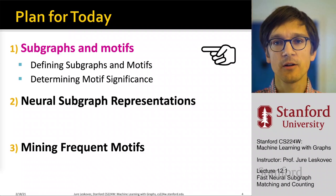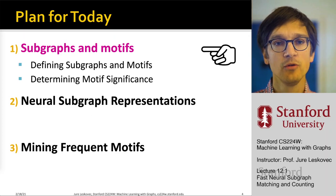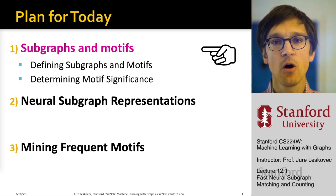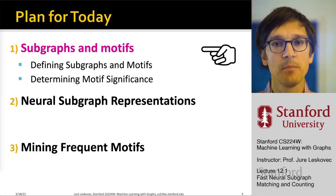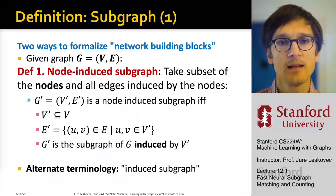We are going to approach this problem in three steps. First, we will talk about subgraphs and motifs — defining what a subgraph is, what a motif is, and how to identify significant motifs. Then we'll talk about how we can use graph neural networks and embeddings to represent subgraphs, and how we can quickly identify common subgraphs using only the embedding space, with no need for expensive discrete-type matching.